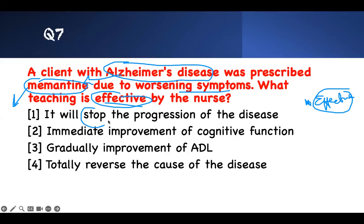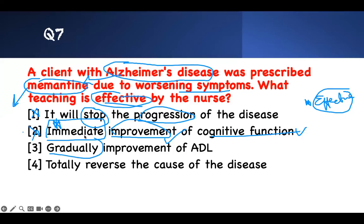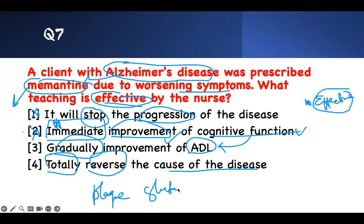'It will stop the progression' — no medication stops disease progression. Wrong. 'It will immediately improve cognitive function' — half of the answer looks right, but the word 'immediately' is wrong. No medication works right away; it takes time. Wrong. 'Gradual improvement of your activity of daily living' — when cognitive function improves, ADLs increase. Correct. 'Reverse the cause of the disease' — bad word. It does not reverse the plaques caused by glutamate accumulation — that's the underlying pathophysiology. Memantine blocks glutamate formation. Gradual improvement, not immediate. That is the answer.